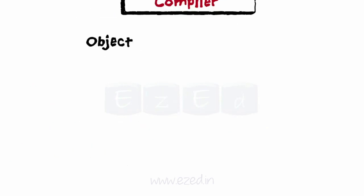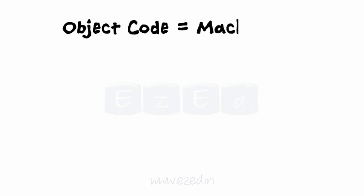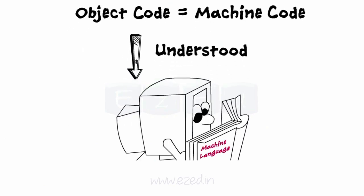The object code is usually a machine code, also called a machine language, which can be understood directly by a specific type of CPU.